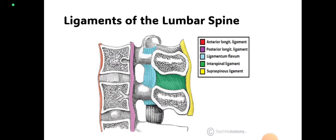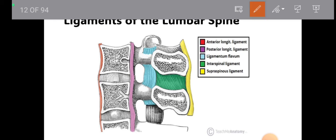The ligaments of the lumbar spine include: the anterior longitudinal ligament on the anterior side of the vertebral body, the posterior longitudinal ligament on the posterior side, ligamentum flavum, interspinal ligament, and the supraspinous ligament — the posterior-most ligament present on the spinous process.